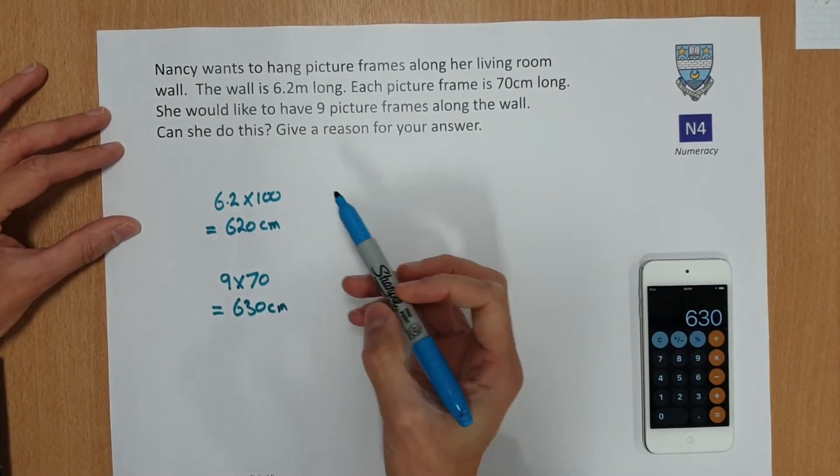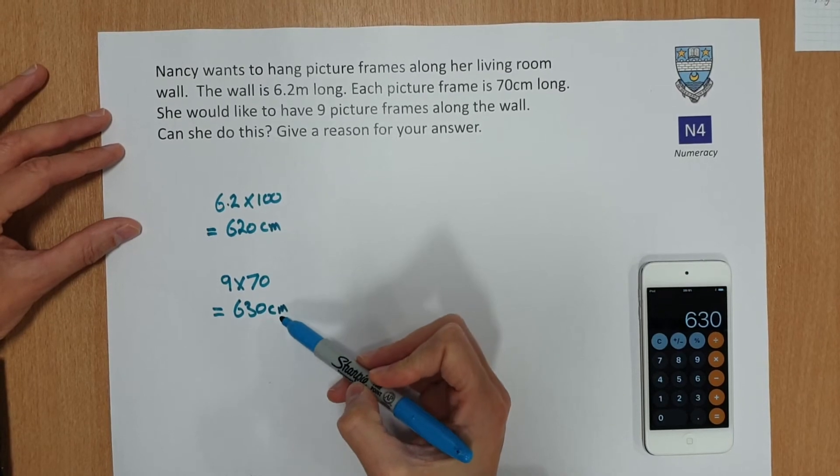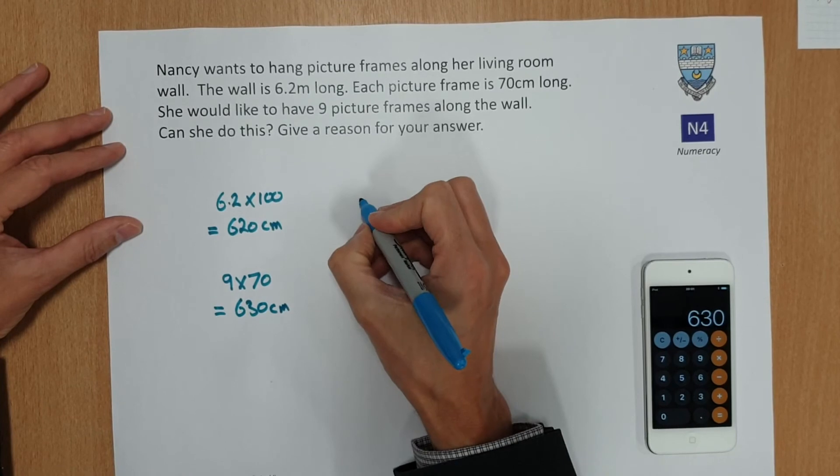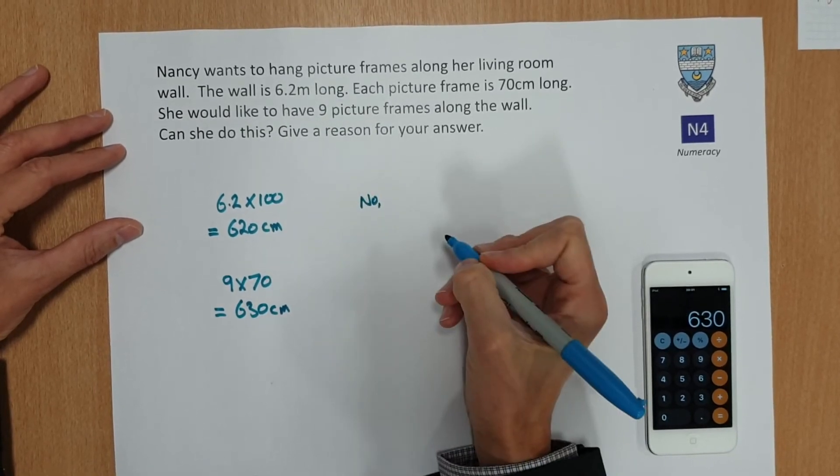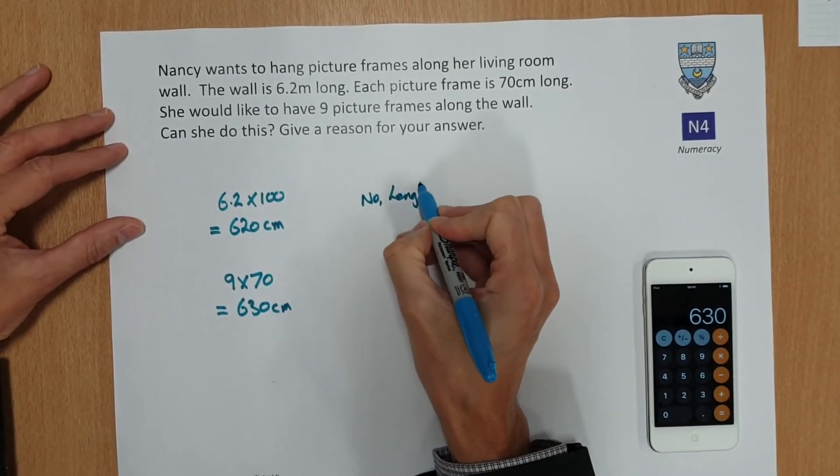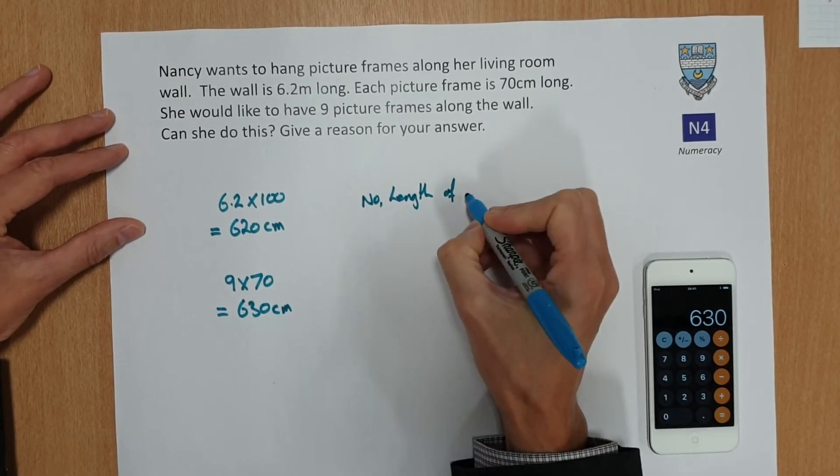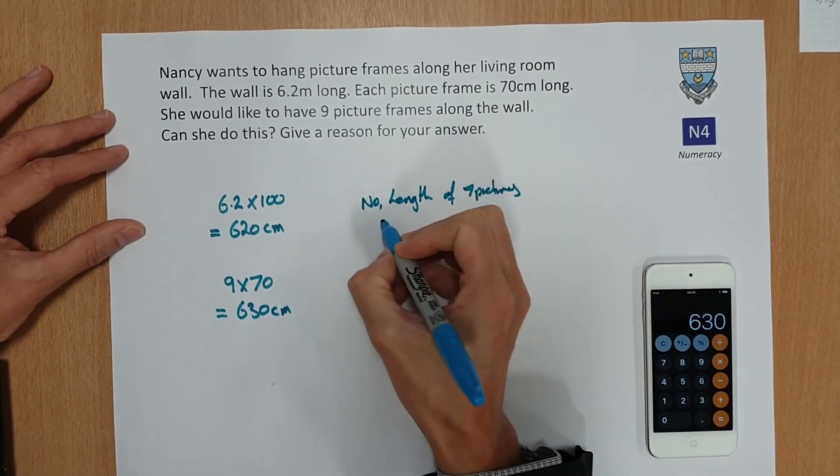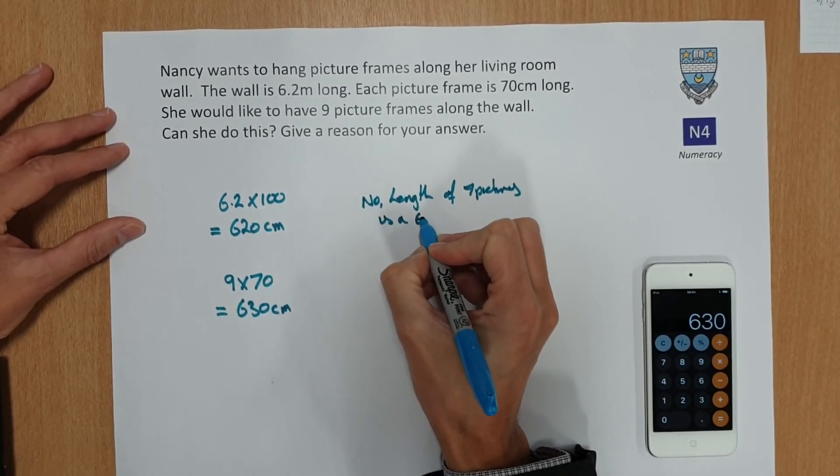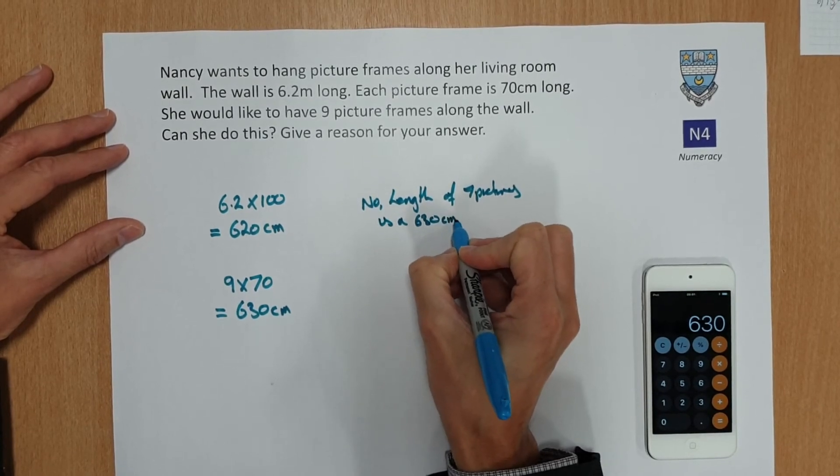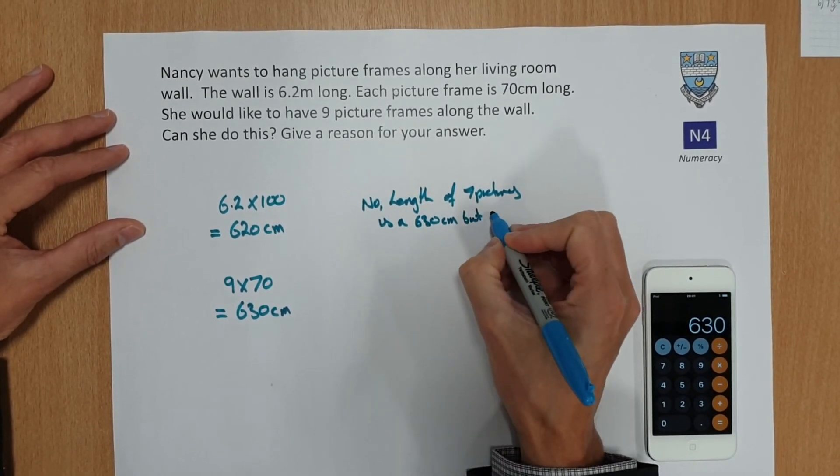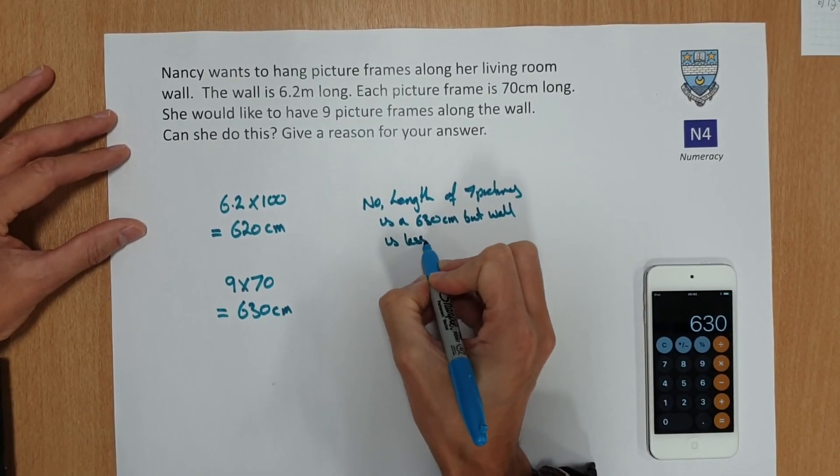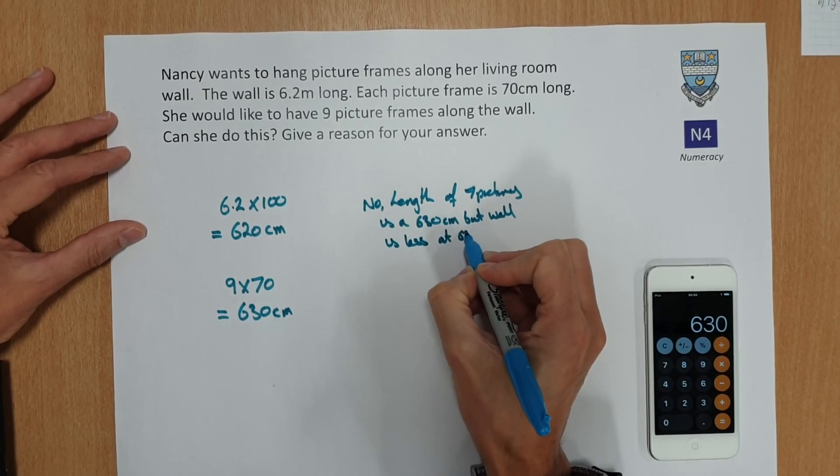So the wall is 620 and the pictures total is 630. Can she do this? No. The length of nine pictures is 630 centimeters, but the wall is less at 620 centimeters.